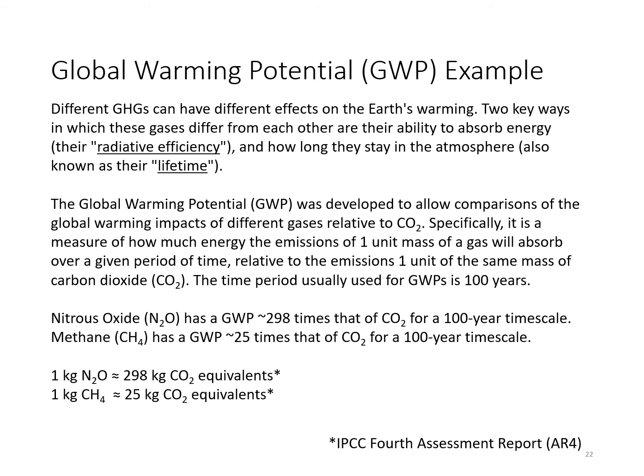Here's an example that has application to global warming. Different greenhouse gases have different effects on the earth's warming. Two key ways in which gases differ from each other are their ability to absorb energy, or radiative efficiency, and how long those gases stay in the atmosphere, also known as their lifetime. Global warming potential was developed to allow comparisons of the impacts of different gases relative to CO2. Specifically, it's a measure of how much energy the emissions of one unit mass of a gas will absorb over a period of time relative to the emissions of one unit of the same mass of carbon dioxide. The time period usually used is about 100 years. Nitrous oxide has a global warming potential about 300 times that of CO2 for a 100-year timescale. Methane has a global warming potential 25 times that of CO2 for a 100-year timescale.